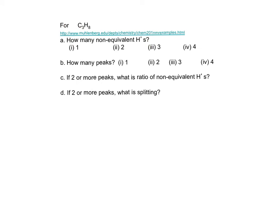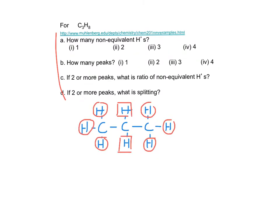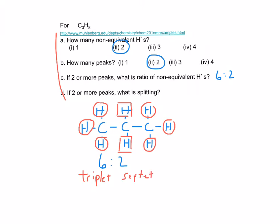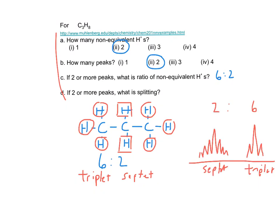Let's practice with C3H8. Stop the video and answer these four questions. Looking at the structure of C3H8: the protons in circles are equivalent, and the protons in boxes are also equivalent, so we receive two peaks in a 6 to 2 ratio. The circled protons have two non-equivalent protons on the adjacent carbon, so applying the N+1 rule, those circled protons will be split into a triplet. The protons in boxes have six non-equivalent protons on adjacent carbons, so that peak would be split into a septet. Here's a rough sketch of the propane NMR spectrum showing the ratio of non-equivalent protons and the splitting.